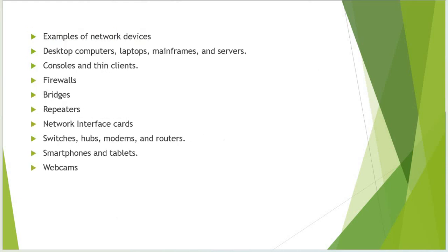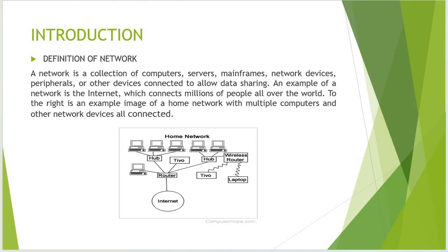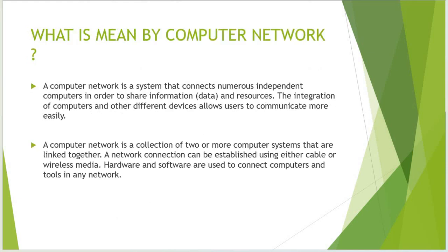The examples of network devices are hub, router, switches, and wireless router. Moving to the meaning of computer network: you know what is meant by network, but how network operations are performed in computers — we will see one by one. The computer network is a system which connects numerous independent computers to share information and resources.